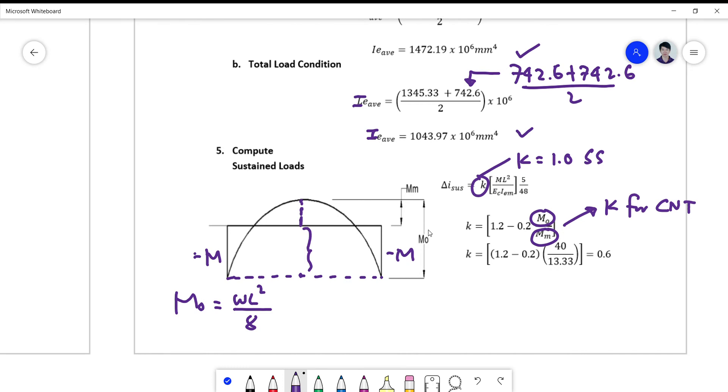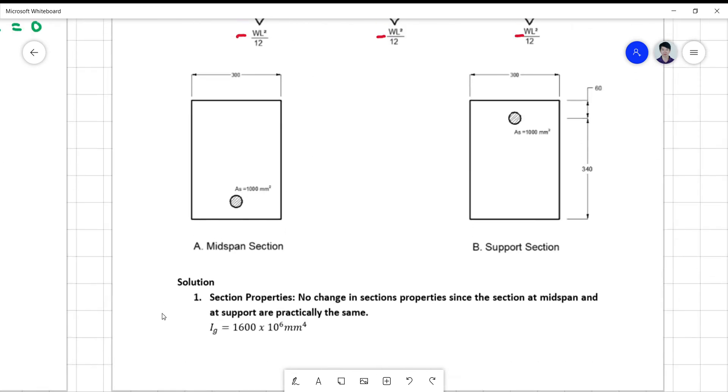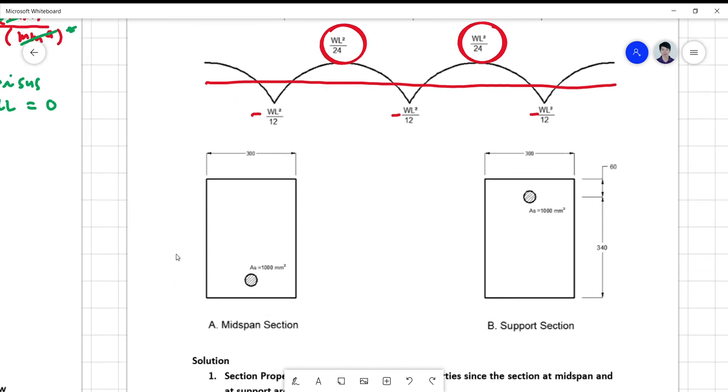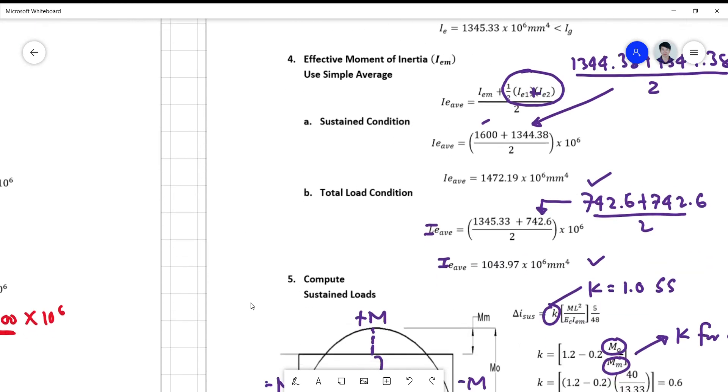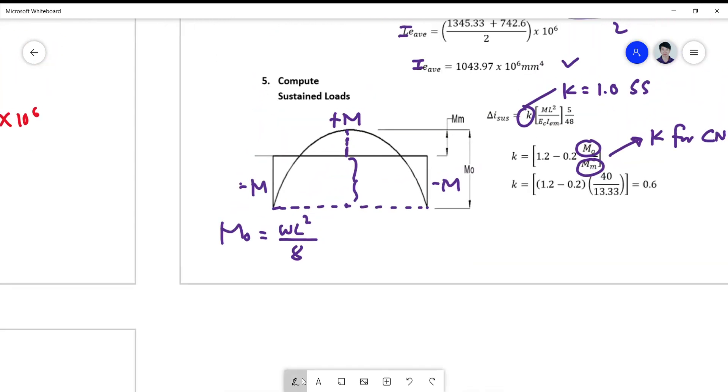So what is your Mo? MM is your M positive or positive M. And if you look at the diagram here, this is WL squared 24 and WL squared 12. This is the midspan and the support moments. So all we have to do is to get the values as computed in your sustained loadings.